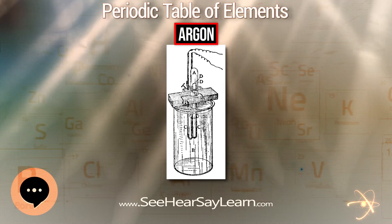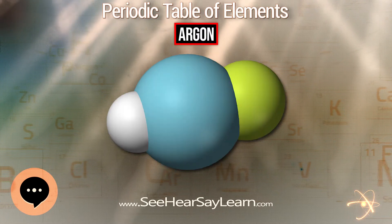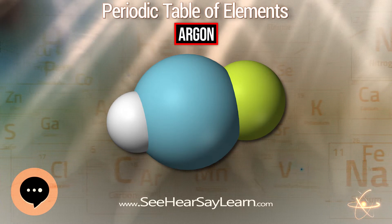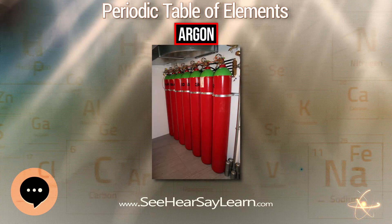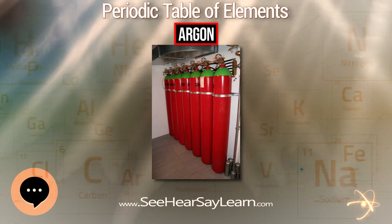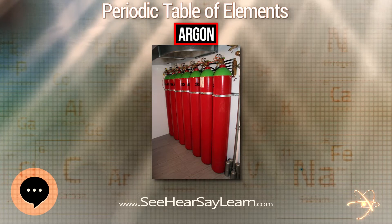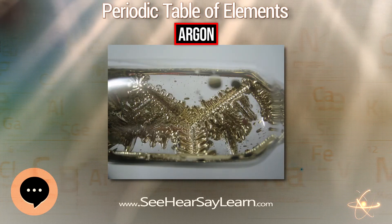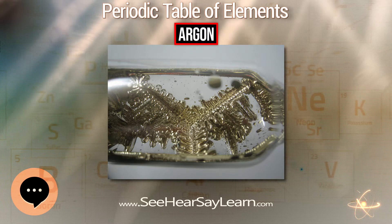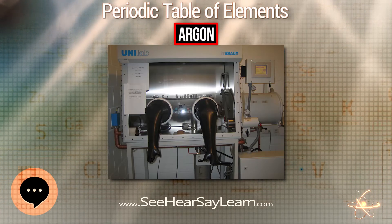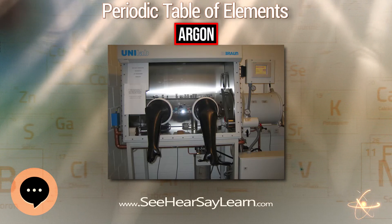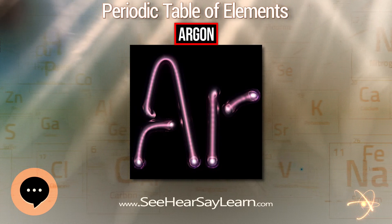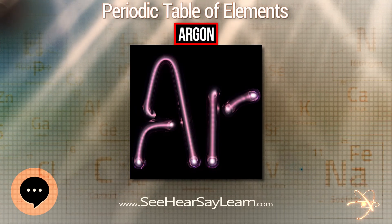Although argon is non-toxic, it is 38 percent denser than air and therefore considered a dangerous asphyxiant in closed areas. It is difficult to detect because it is colorless, odorless, and tasteless. A 1994 incident in which a man was asphyxiated after entering an argon-filled section of oil pipe under construction in Alaska highlights the dangers of argon tank leakage in confined spaces and emphasizes the need for proper use, storage, and handling.